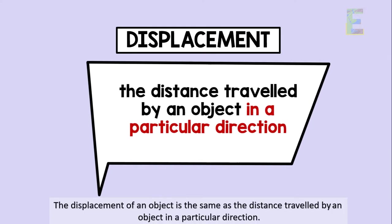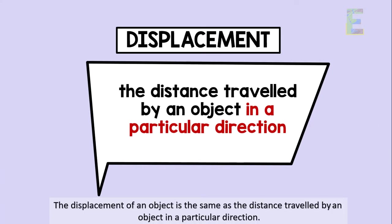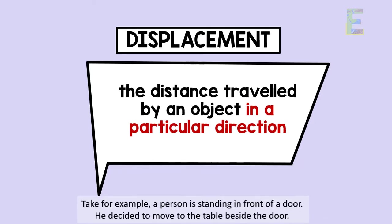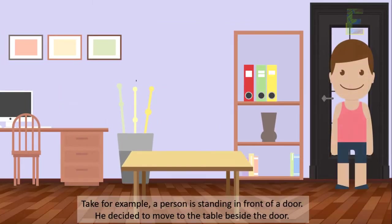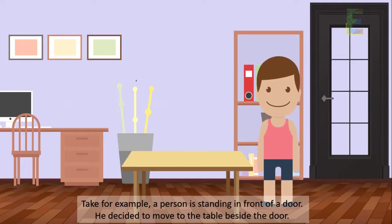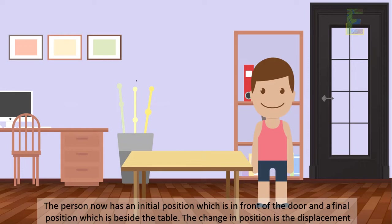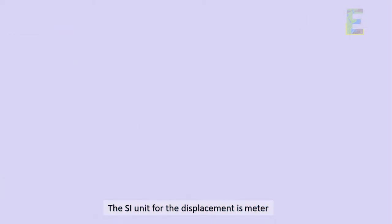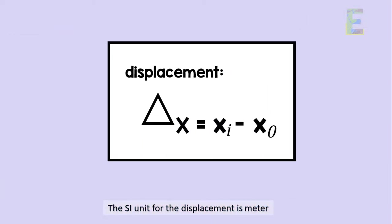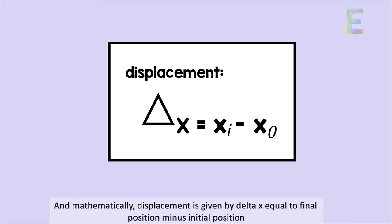The displacement of an object is the same as the distance traveled by an object in a particular direction. Take for example, a person is standing in front of a door. He decided to move to the table beside the door. The person now has an initial position which is in front of the door and a final position which is beside the table. The change in position is the displacement. The SI unit for the displacement is meter. And mathematically, displacement is given by delta x equals final position minus initial position.